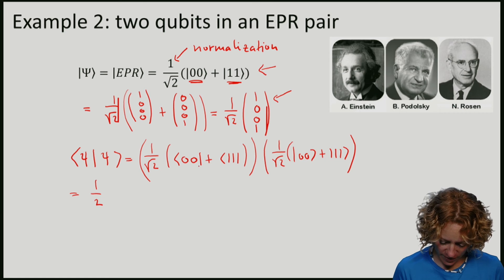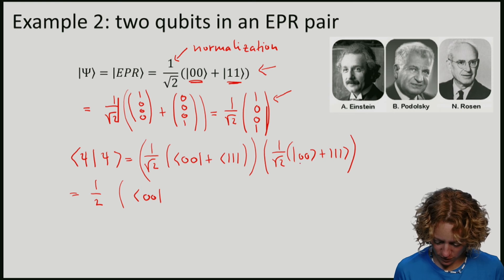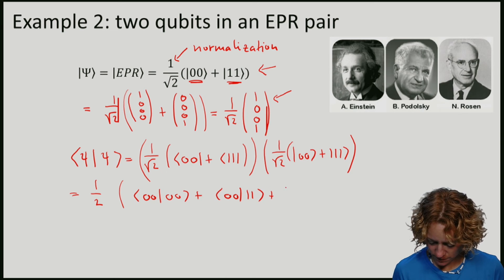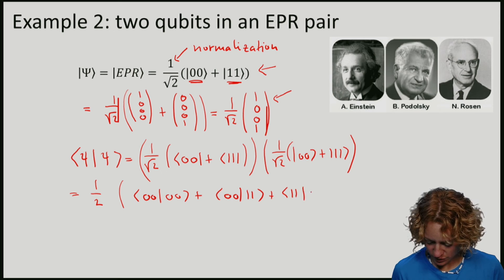So we have the inner product of this times the original vector. So from the 1 over square root 2, I have this 2 times, I get a half. And now we have all the different combinations. So we have 00 with 00, 00 with 11, 11 with 00, and finally 11 with 11.